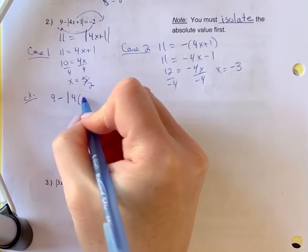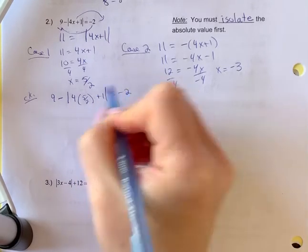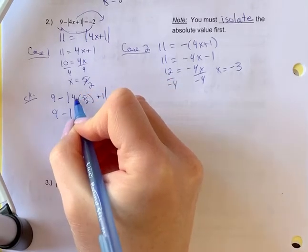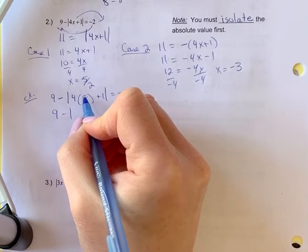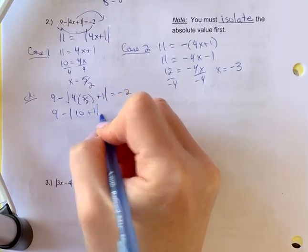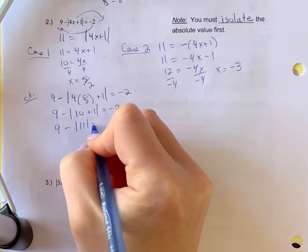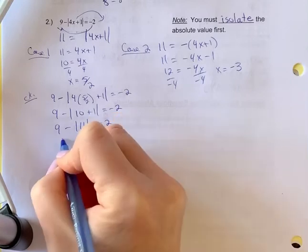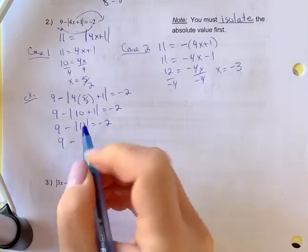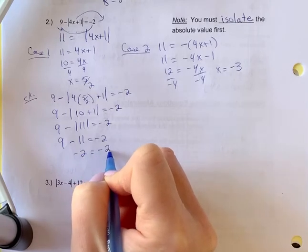So I'm substituting in five over two. We get nine minus, so four times five, twenty over two, we get ten plus one equals negative two. Nine minus eleven equals negative two. When we take eleven out of the brackets here, we're going to get nine minus eleven equals negative two. So negative two equals negative two.